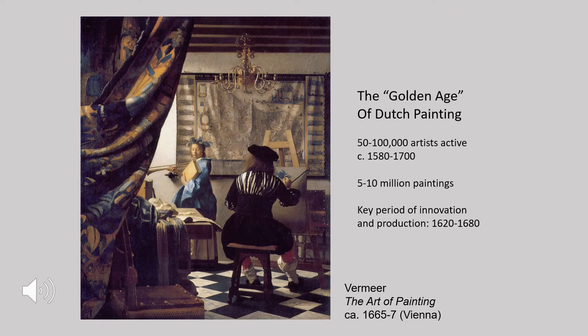The 17th century has often been called the golden age of Netherlandish or Dutch culture. That term is highly contested at present because it was not an age of golden happiness for everyone, only really for elite members of society. However, we can still call it a golden age of painting because there was an unprecedented flourishing of artists and different kinds of art at all levels of production — something as many as 10 million paintings produced during this period has been estimated.